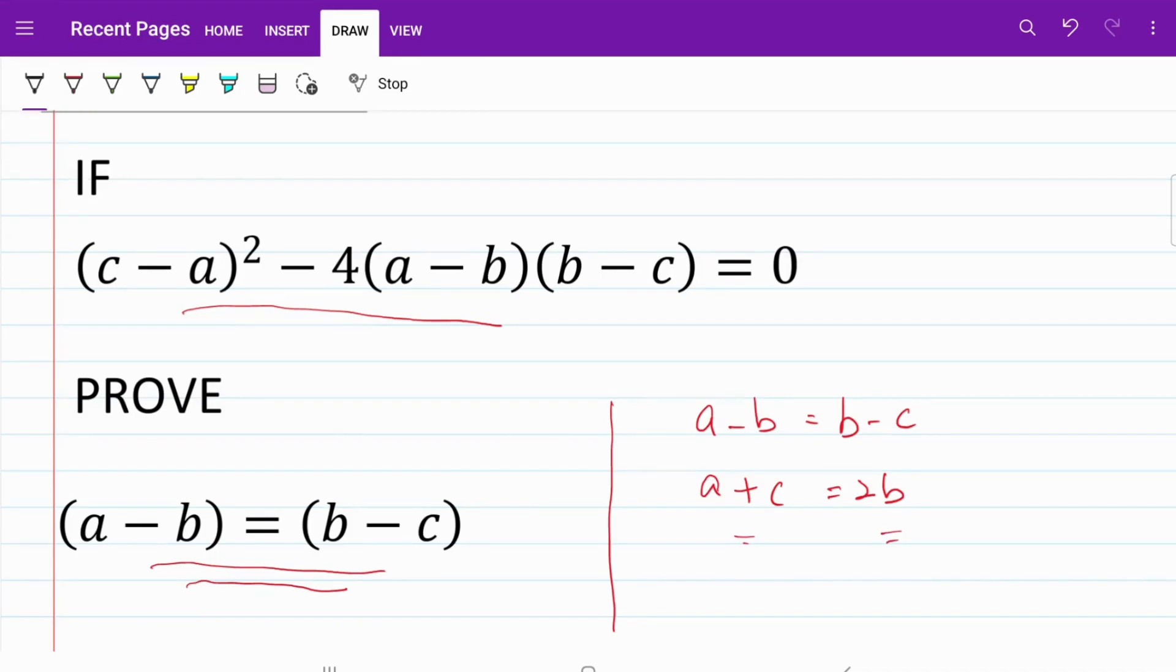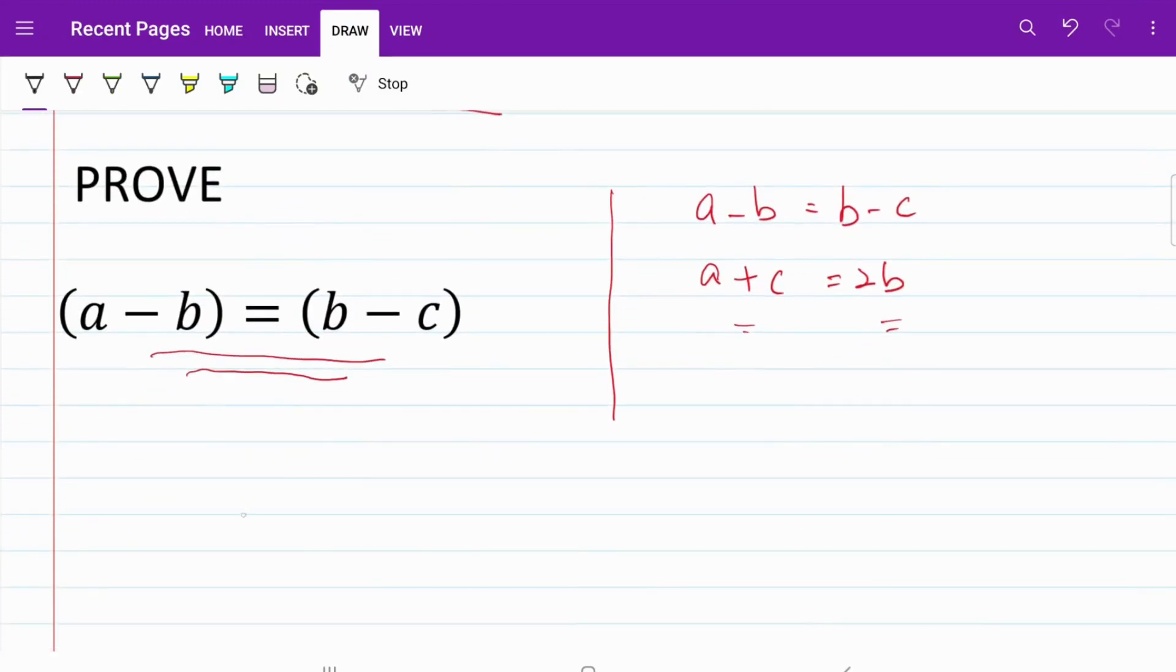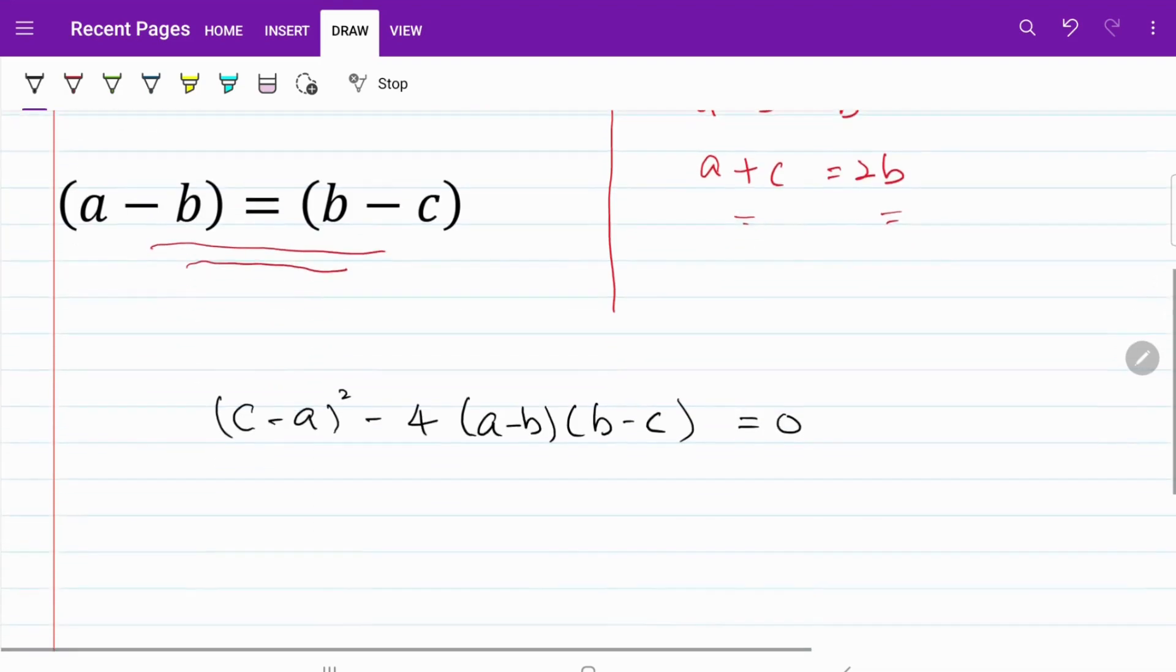Let's start by copying down the original equation. I have (c - a)² - 4(a - b)(b - c) = 0. Let's go ahead and open up all the brackets.